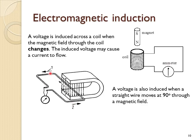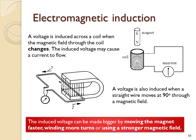When the wire is moving in direction 1, a voltage would be generated across this voltmeter, or an ammeter would show a current flowing in the wire. When the wire is moved in the other direction through the magnetic field, the voltmeter would move in the other direction. But when the wire is stationary and not moving, it's not cutting through any lines of magnetic field, and no voltage would be induced. The induced voltage can be made bigger by moving the magnet faster, winding more turns around the coil, or using a stronger magnetic field. Similarly, you can also move the wire faster, use a number of turns of wire, or a stronger magnetic field.